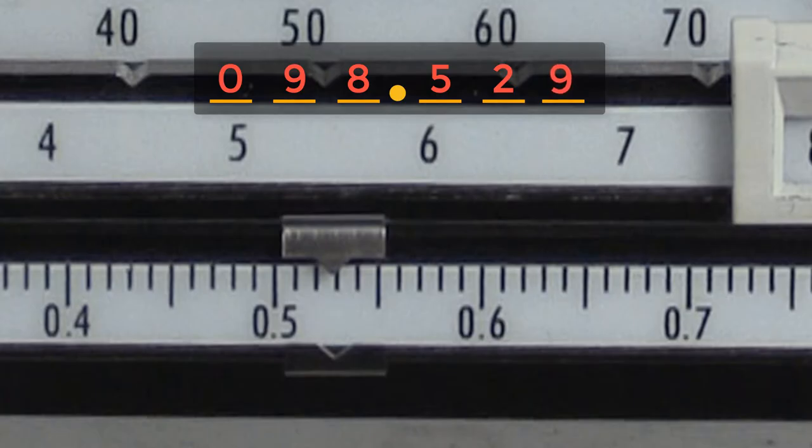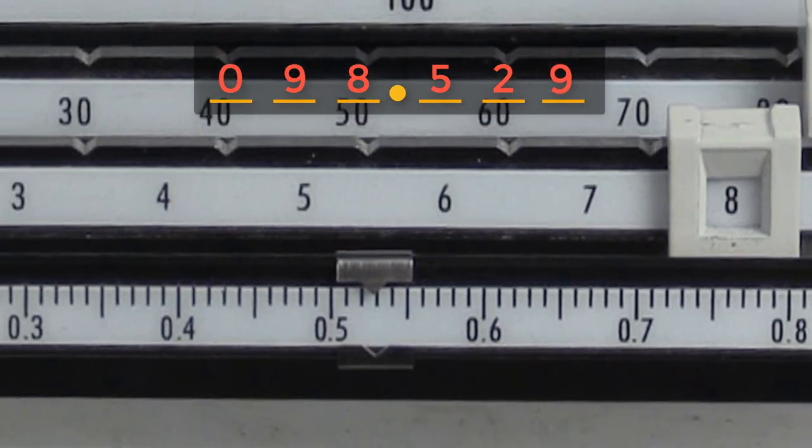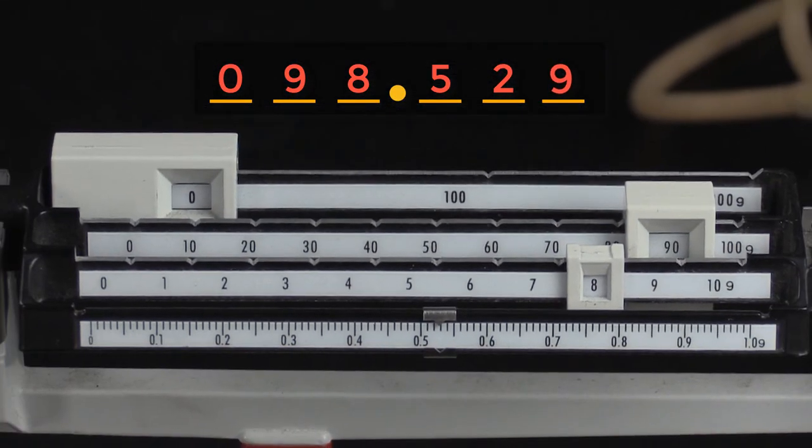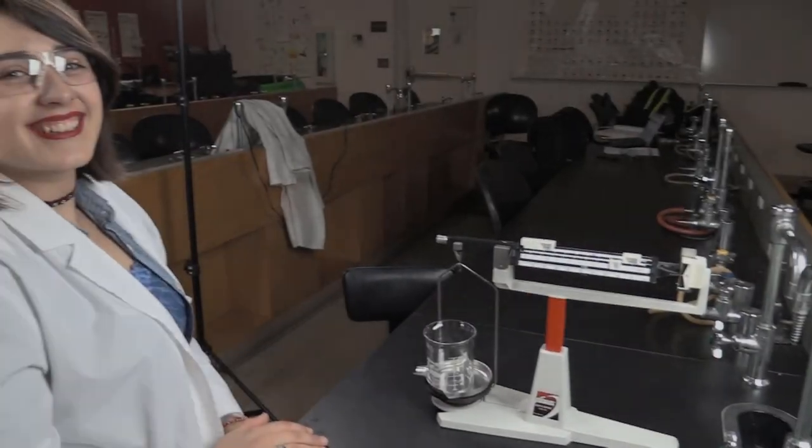This last digit is our doubtful digit, and is the result of the inherent uncertainty in this device. This measurement has five significant figures and three decimal places. Thanks, Ileana.